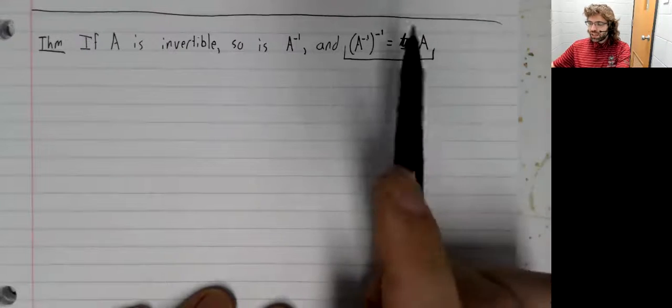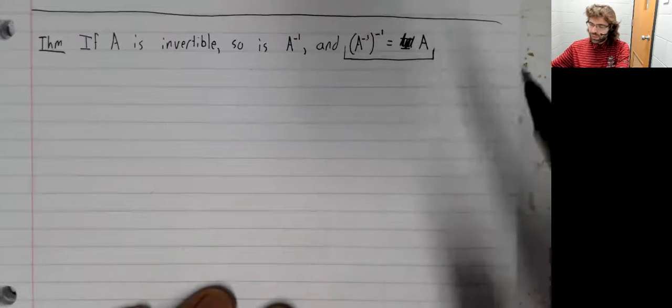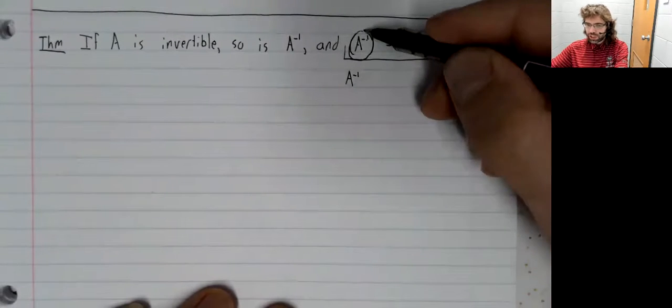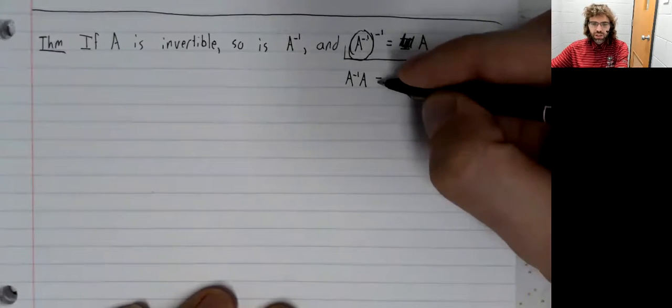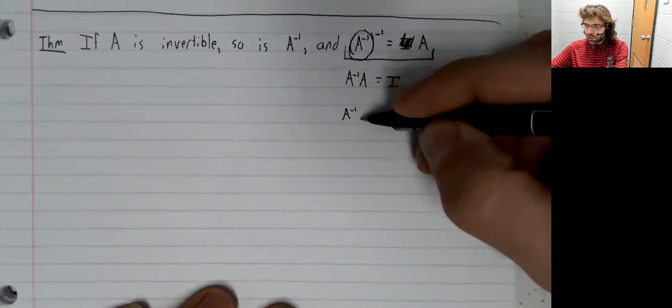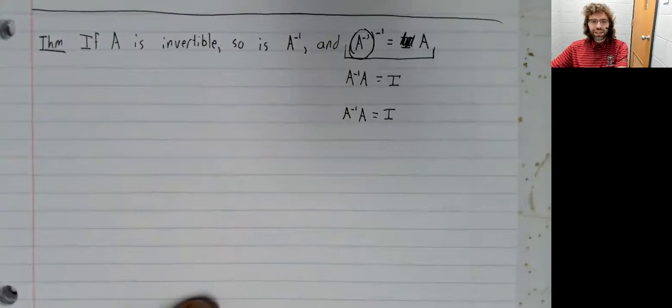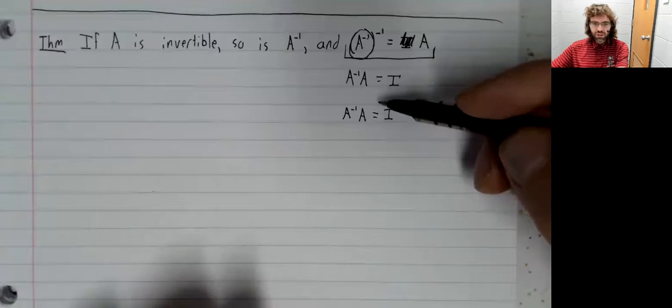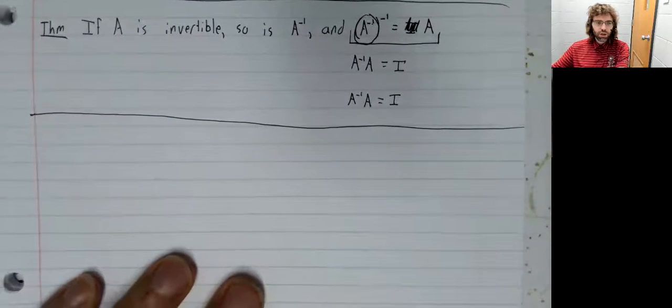The statement that an inverse of a matrix equals something else is the statement that when you take this matrix and multiply it by the something else, you get the identity. And that's true, no matter what order you do the multiplication in. This is how we define the inverse. So, check on that.